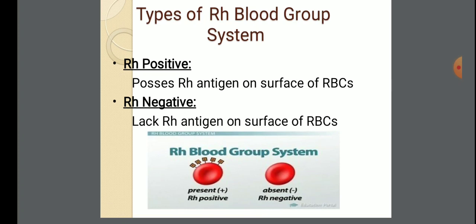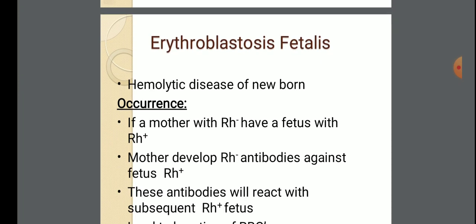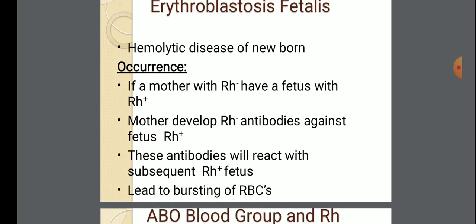Erythroblastosis fetalis is a hemolytic disease of the newborn. It occurs if a mother with RH negative blood has a fetus with RH positive blood. The mother develops anti-Rh antibodies against the fetus's Rh positive blood. These antibodies will react to subsequent Rh positive fetuses, leading to the bursting of RBCs.